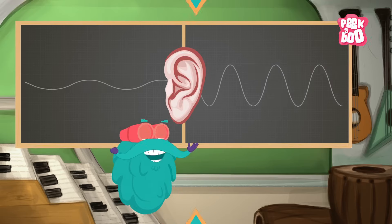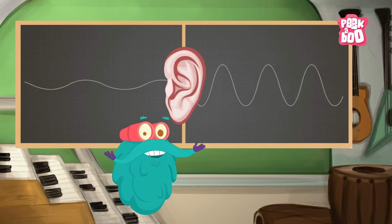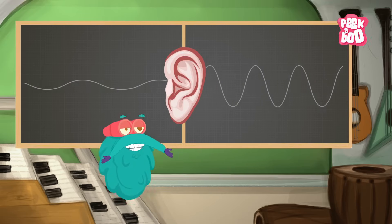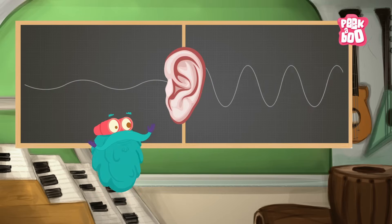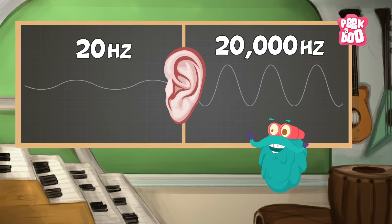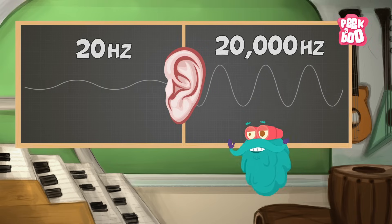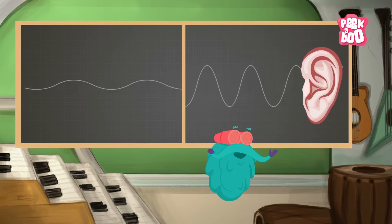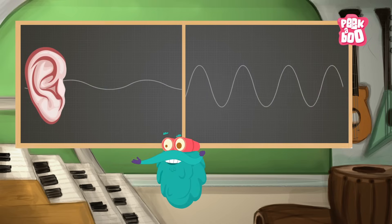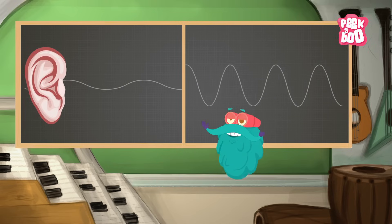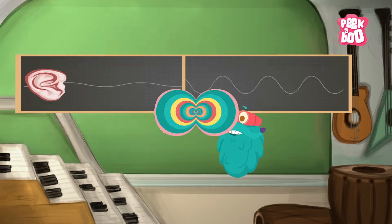The human ear is capable of detecting frequencies between 20 Hz to 20,000 Hz. Any frequency above or below that is inaudible to the human ear.